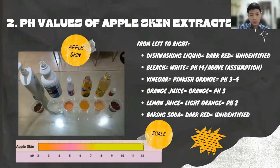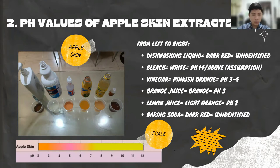For the vinegar, it produces a pinkish orange color. Based on the scale, it has a pH value of 3 to 4, so it's acidic. For the orange juice, it produces an orange color. Based on the scale, it has a pH value of 3, which is quite a strong acid.